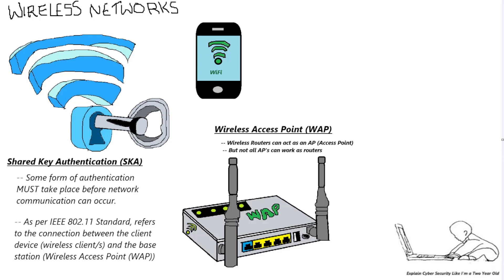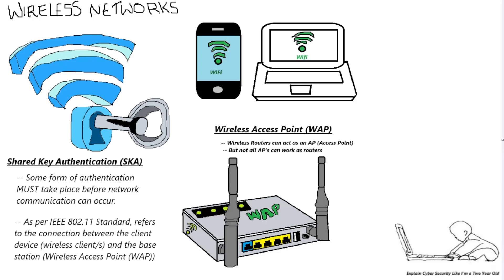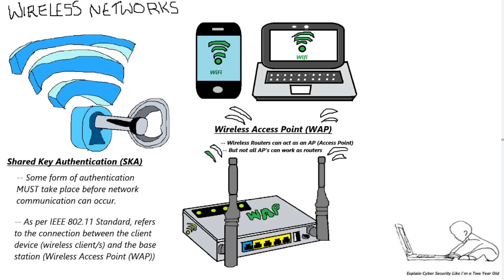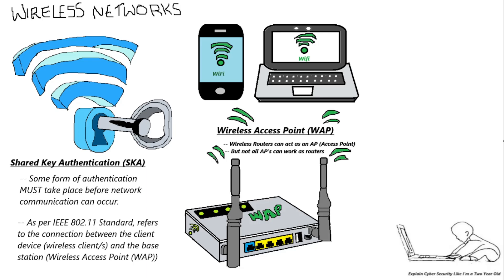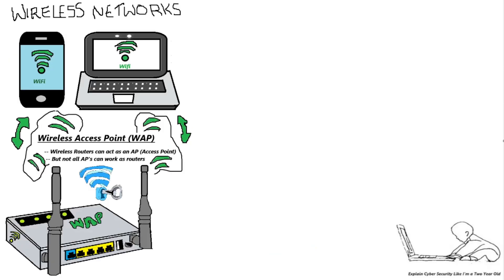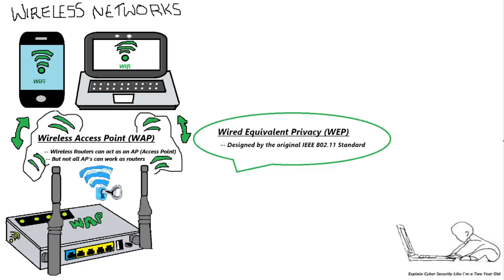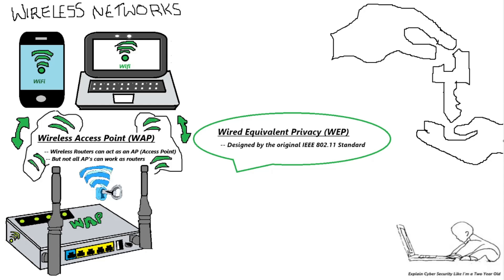There are many different types of Wi-Fi clients, such as your handheld mobile phone device, your laptop, and many other devices. So let's just stick to these two Wi-Fi clients. These two clients want to connect to a wireless access point, WAP, using their wireless connectivity features. This leads us to our first form of Shared Key Authentication — the original technique known as Wired Equivalent Privacy, WEP, as defined by the IEEE 802.11 standard.